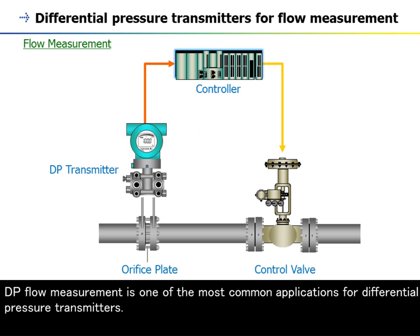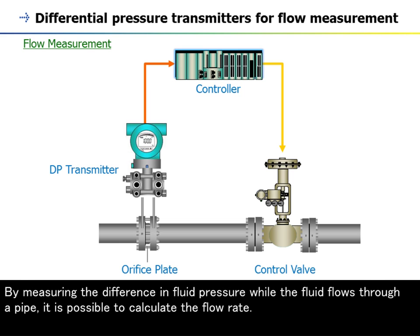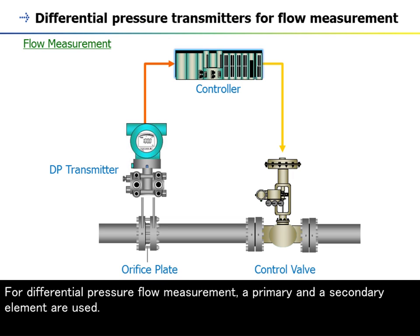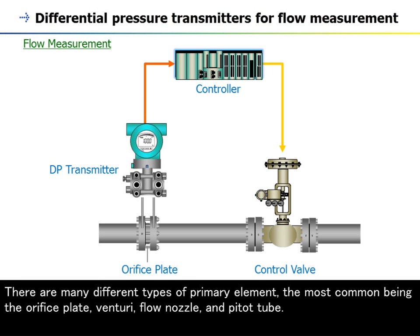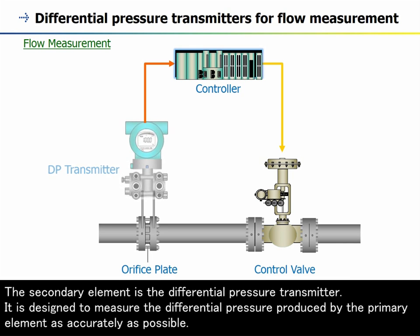DP flow measurement is one of the most common applications for differential pressure transmitters. By measuring the difference in fluid pressure while the fluid flows through a pipe, it is possible to calculate the flow rate. For differential pressure flow measurement, a primary and a secondary element are used. The primary element produces a difference in pressure as flow increases. Common primary element types include the orifice plate, venturi, flow nozzle, and Pitot tube. The secondary element is the differential pressure transmitter.